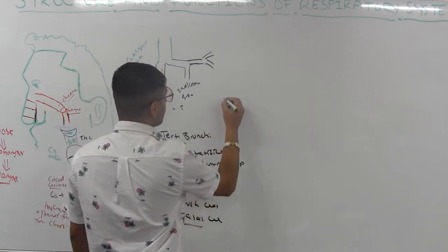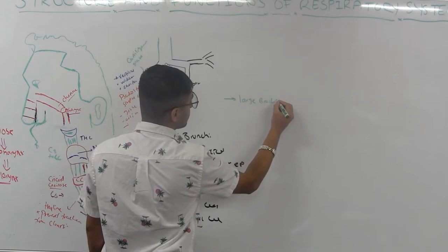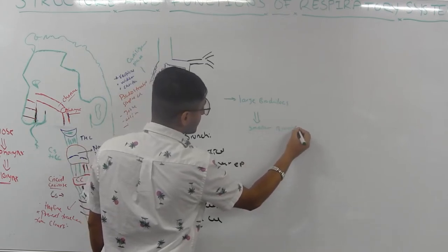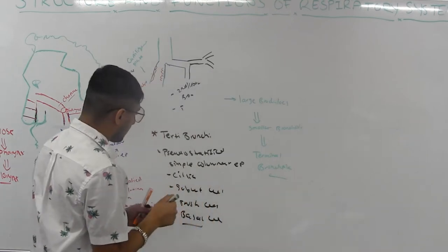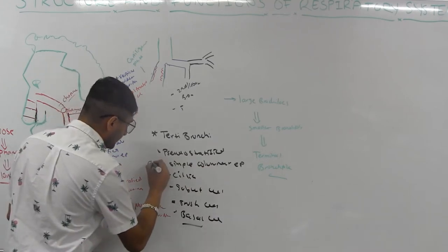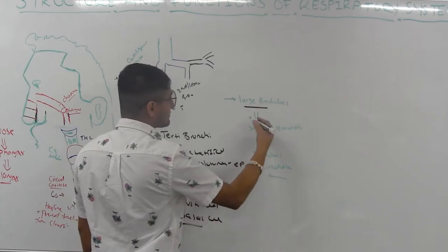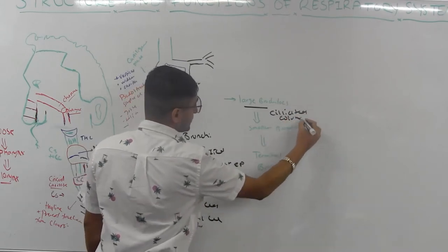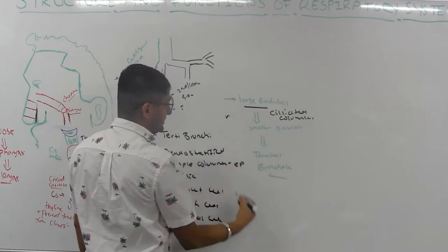Then the tertiary bronchi split into large bronchioles, then smaller bronchioles, and then terminal bronchioles. When you get to the large bronchioles, the epithelium changes from pseudostratified ciliated columnar to simply ciliated columnar epithelium, with very few goblet cells and fewer cilia.